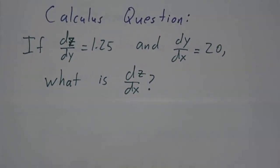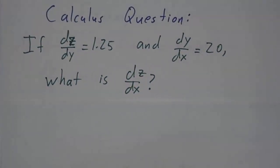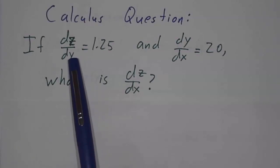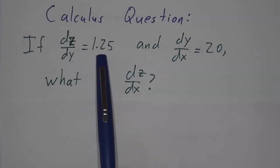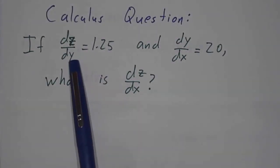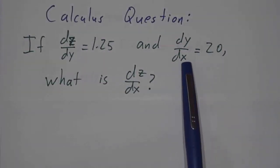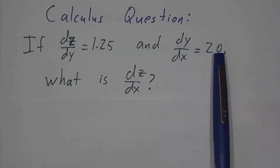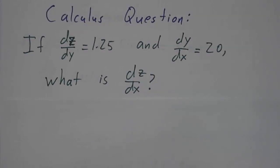Now let's talk about calculus. If we have three variables x, y, and z, they're related. You change one of them, you change the others. And if dz/dy is 1.25, which is to say that z changes by 1.25 for every amount that y changes, and if dy/dx is 20, which is to say that y changes by 20 times as much as x does, then what's dz/dx?